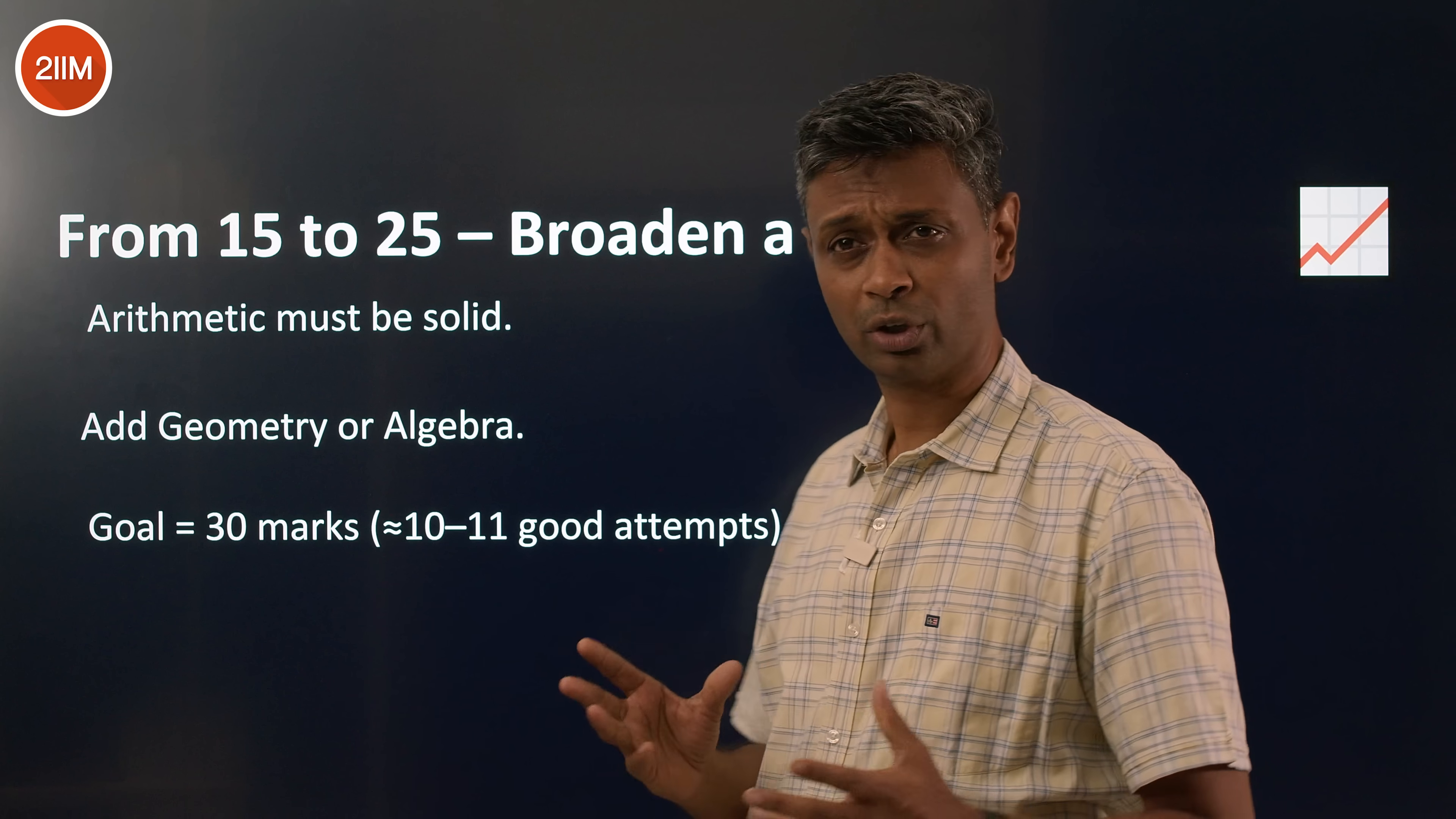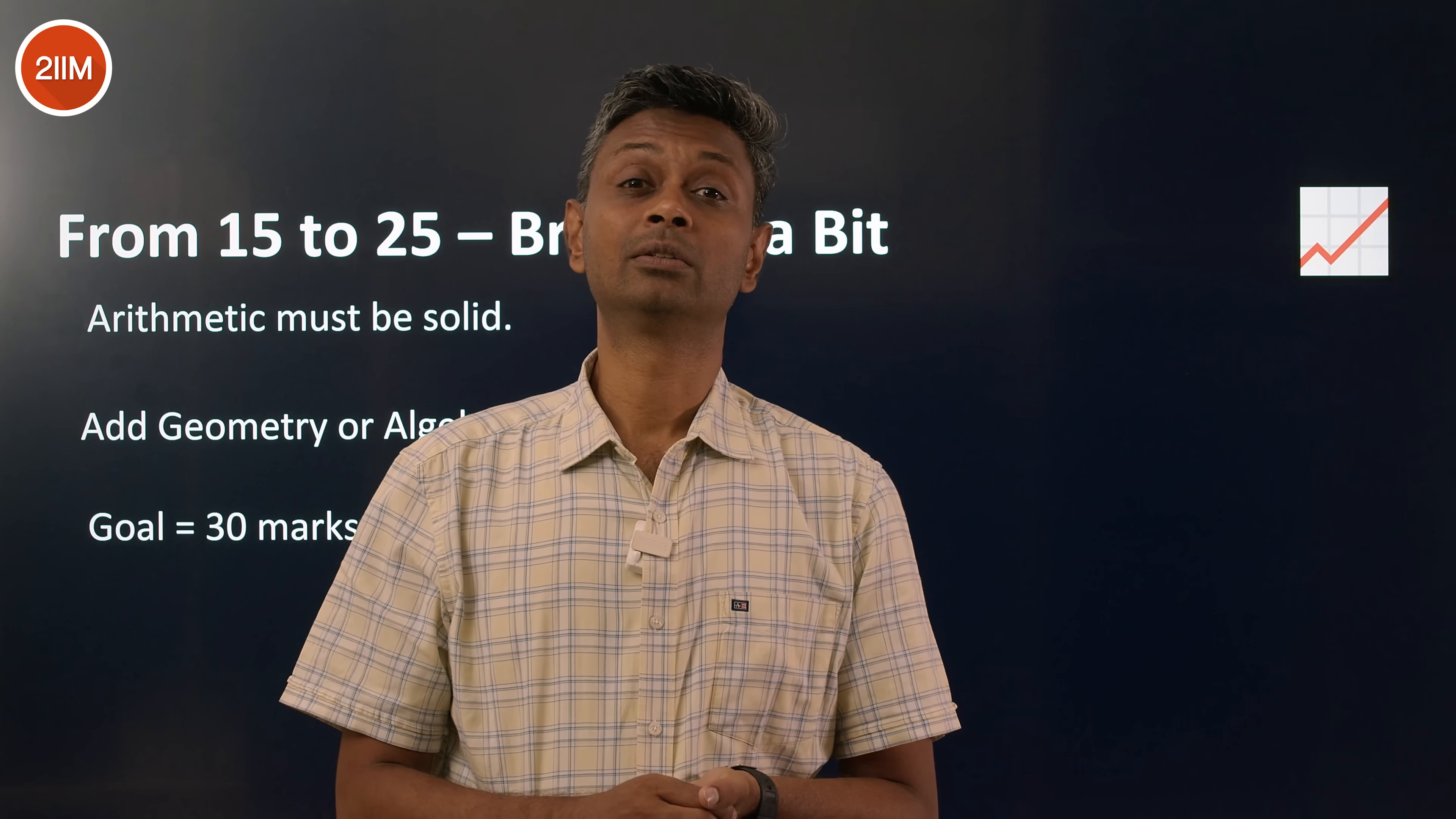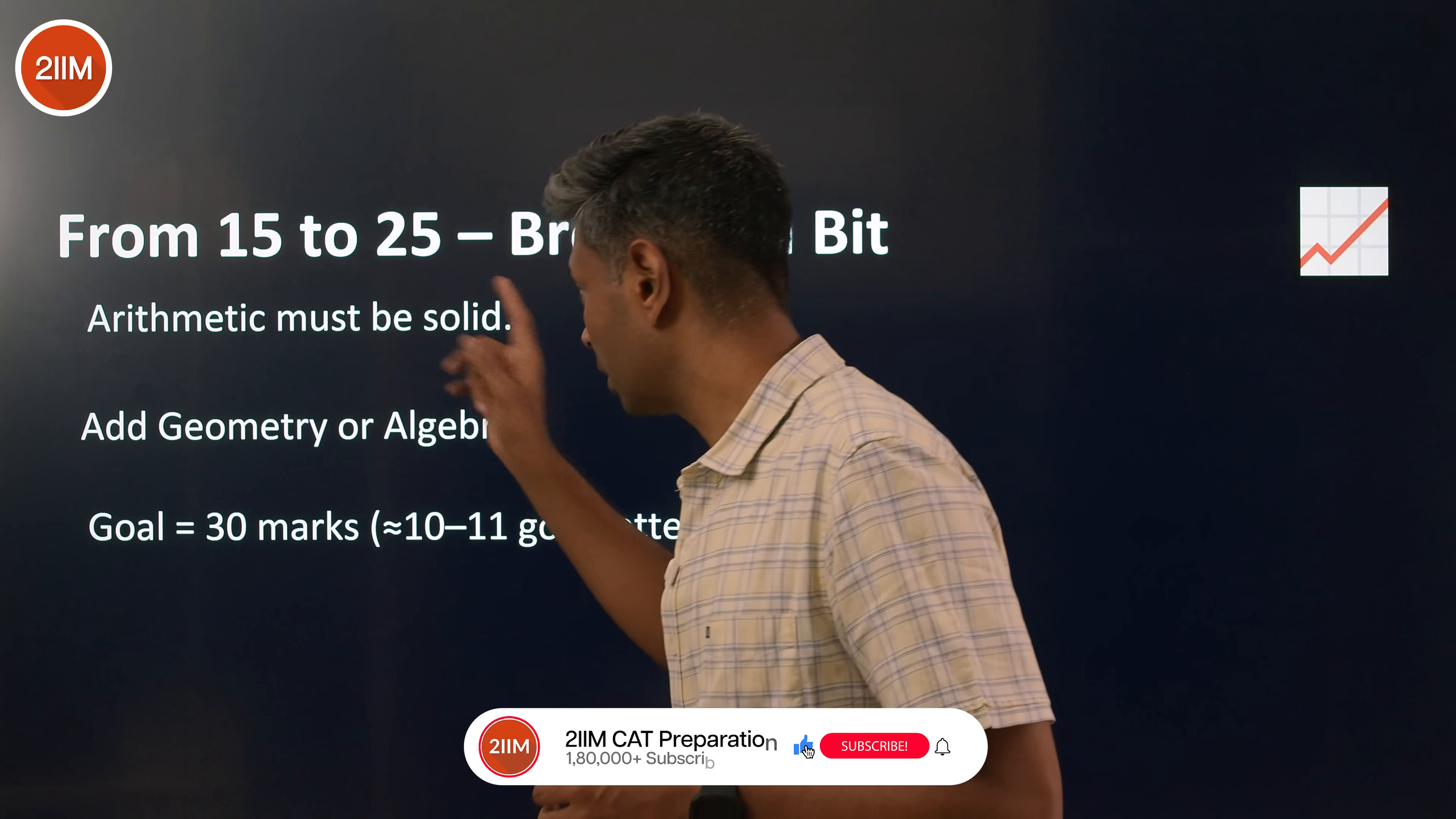15 to 25, what do you do? If you're in this zone, you're consistently getting 15, 16, then you've got to say, look, I'll get everything right in arithmetic. Be the absolute king, not just competent, but be beyond competent. Be very comfortable thinking in terms of quick ideas, quick ways of thinking. Increase your competence. Become more comfortable, ridiculously so, in arithmetic.